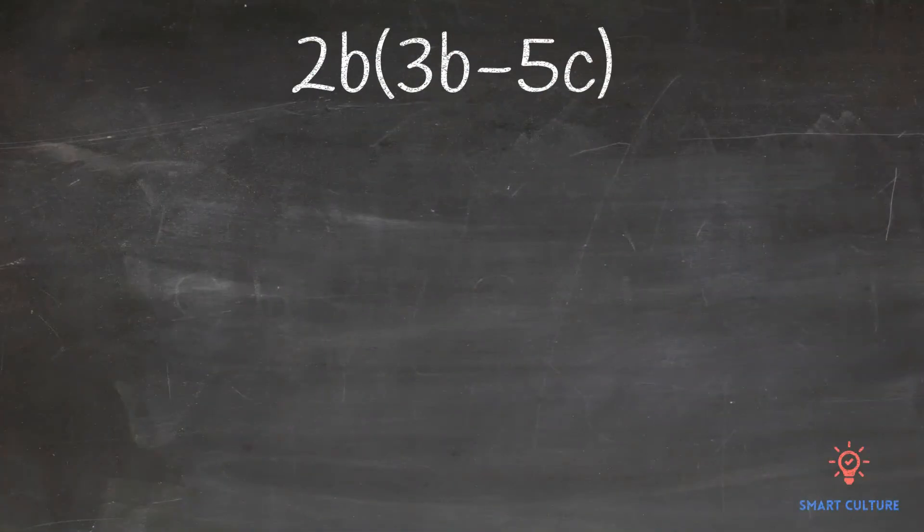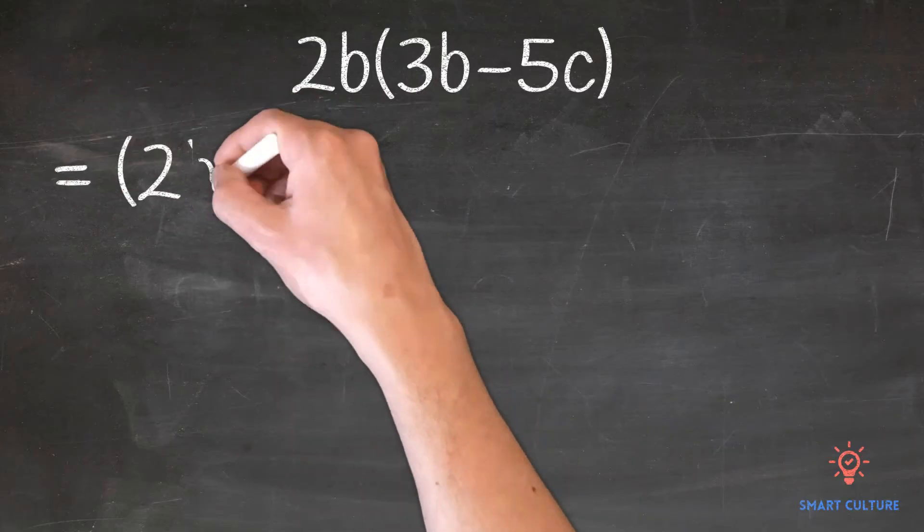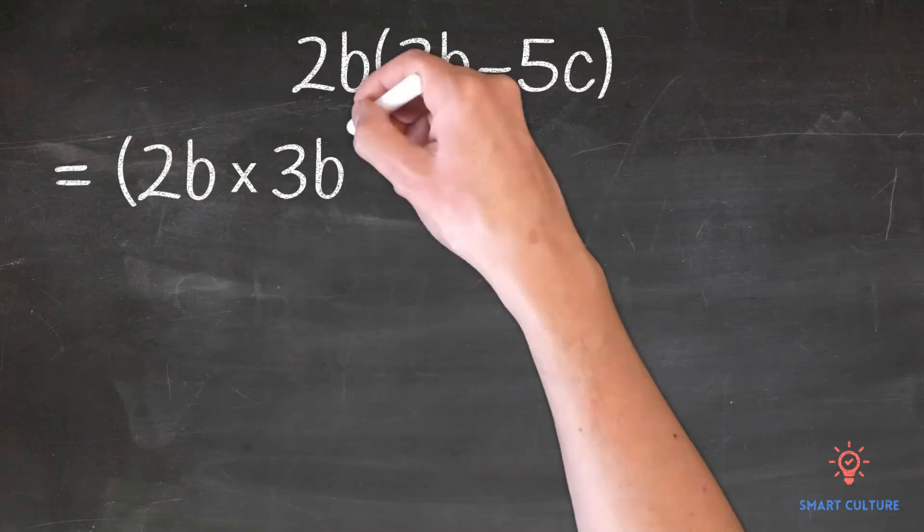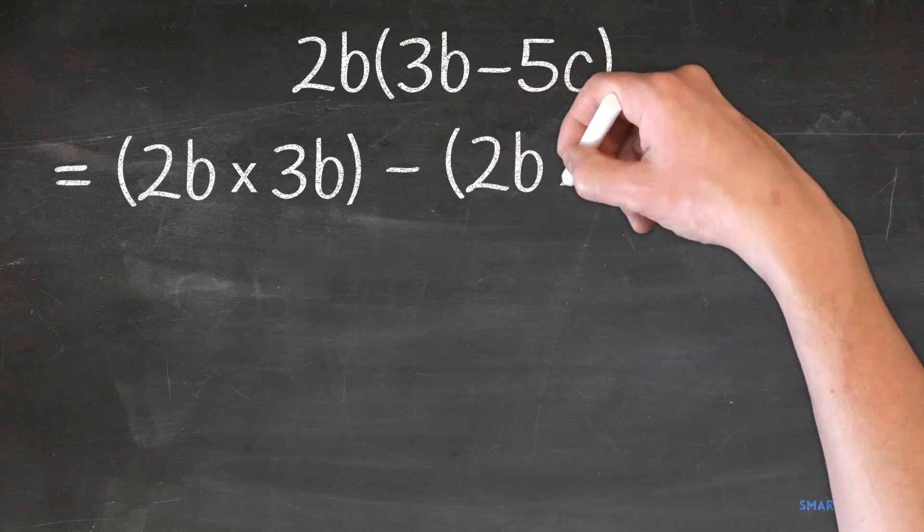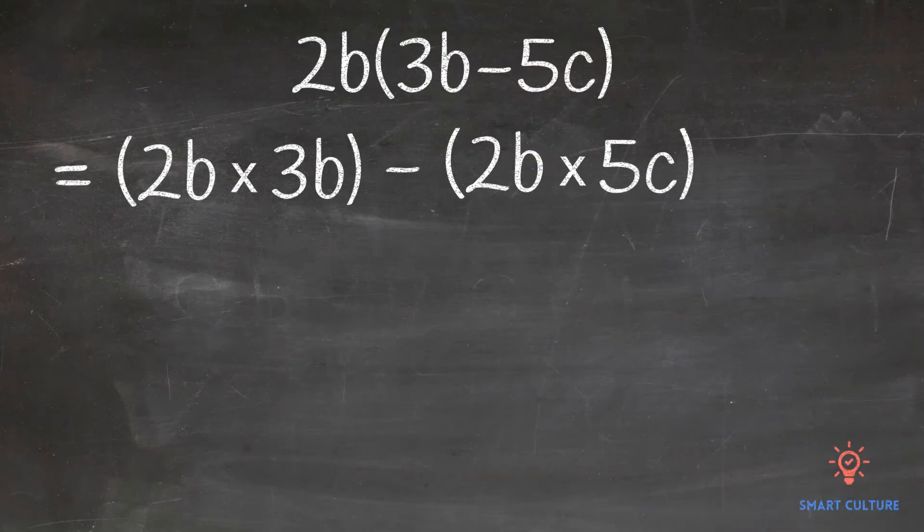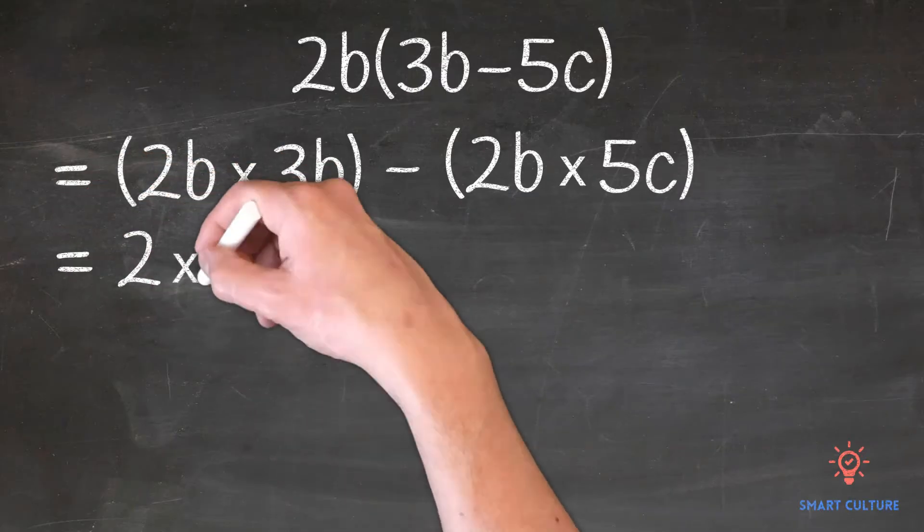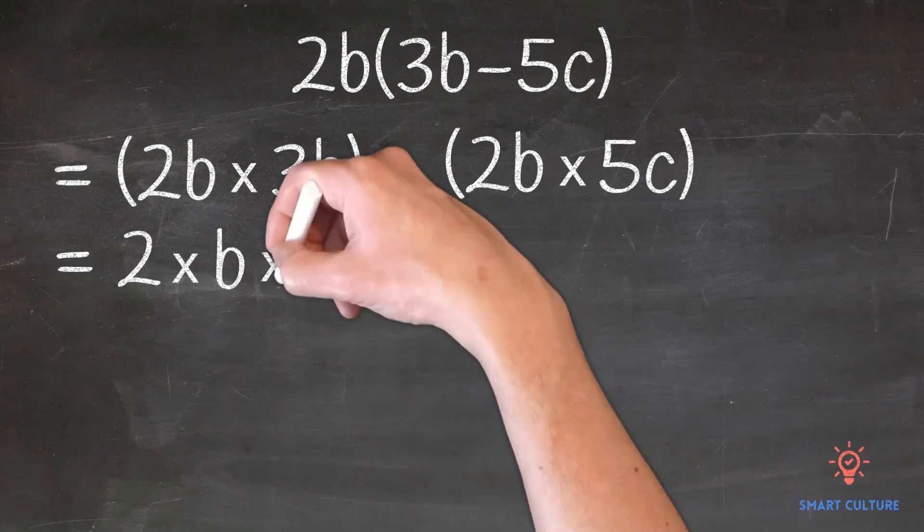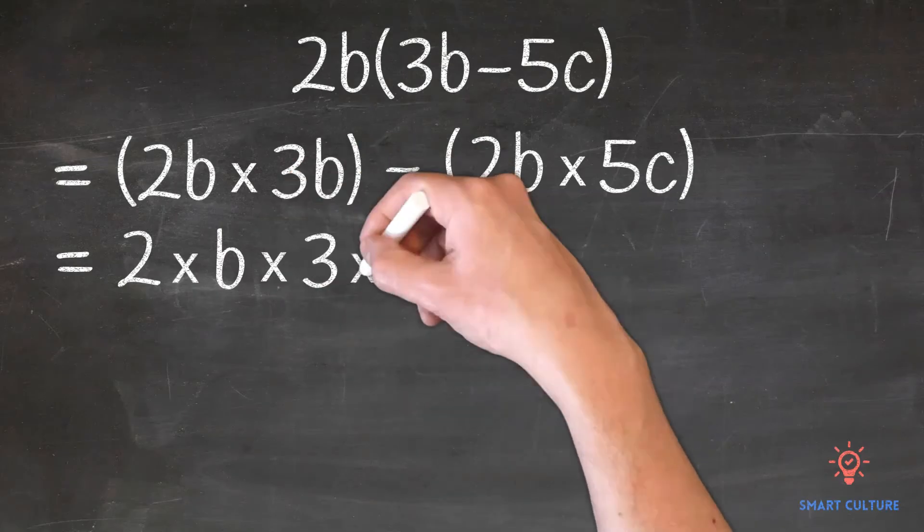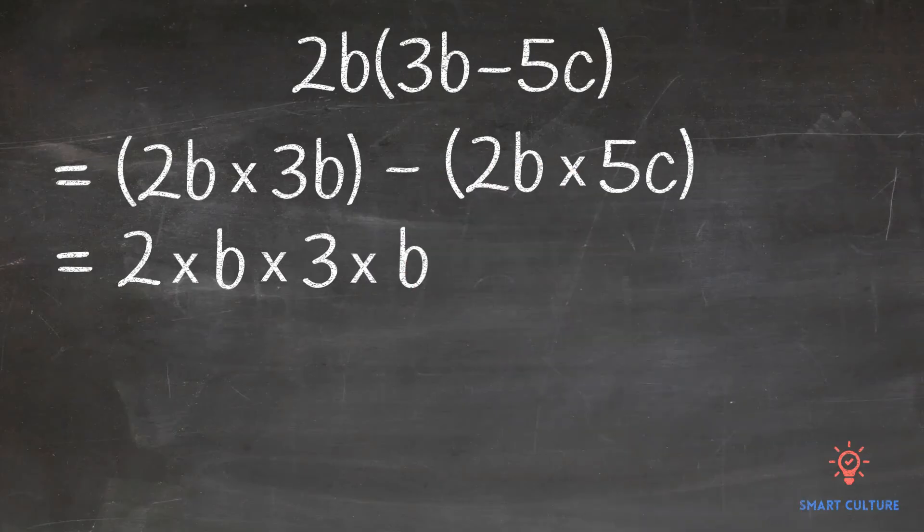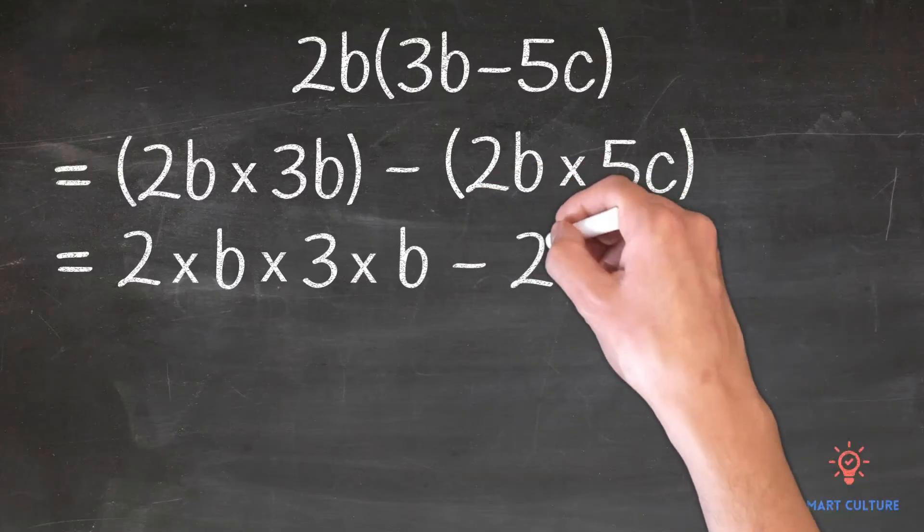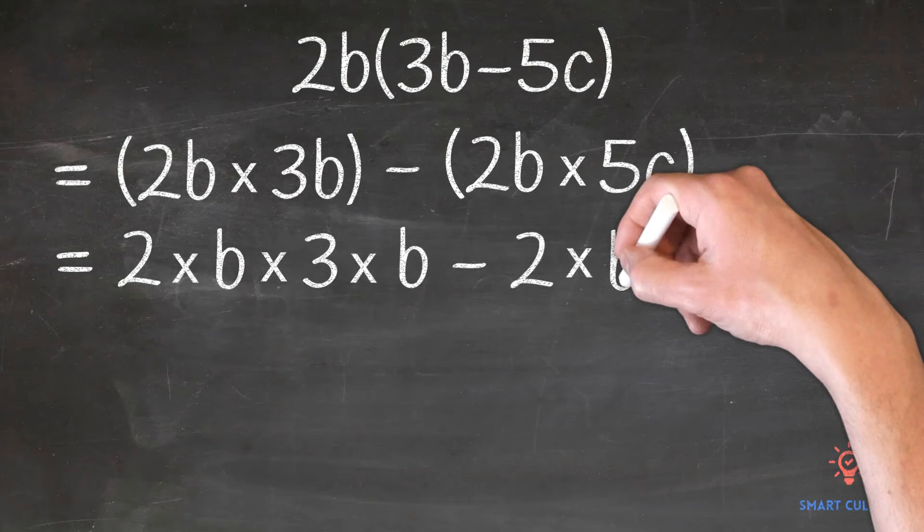Take a look at the following example. So what we have to do now is we have to expand the brackets. To expand a bracket means to multiply each term in the bracket by the expression outside the bracket. So let's start 2b times 3b minus 2b times 5c. So what we'll do now is we'll write it out in expanded notation.